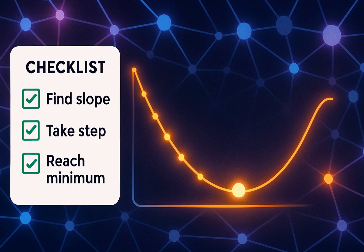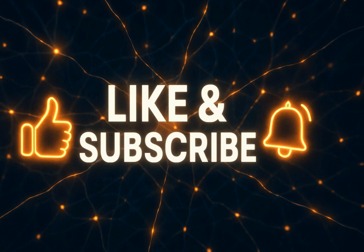So to recap: gradient descent helps AI models learn by taking step-by-step moves downhill, minimizing error. It uses gradients to choose direction, and the learning rate to decide step size. Different variations balance speed and accuracy. And that's gradient descent explained.